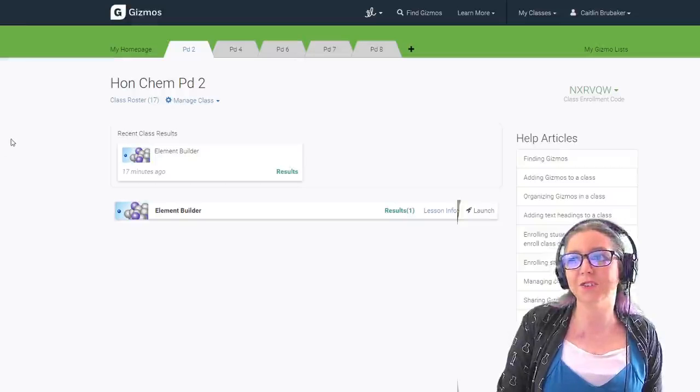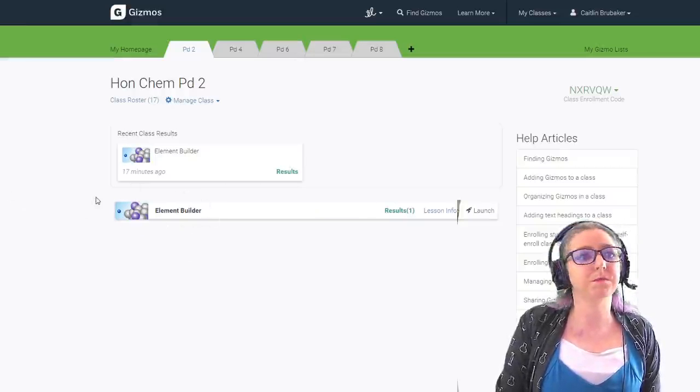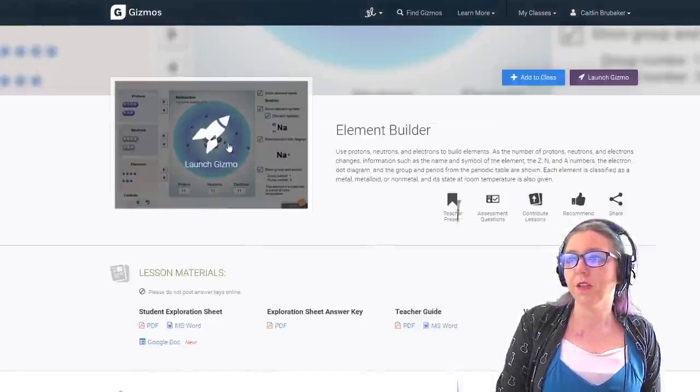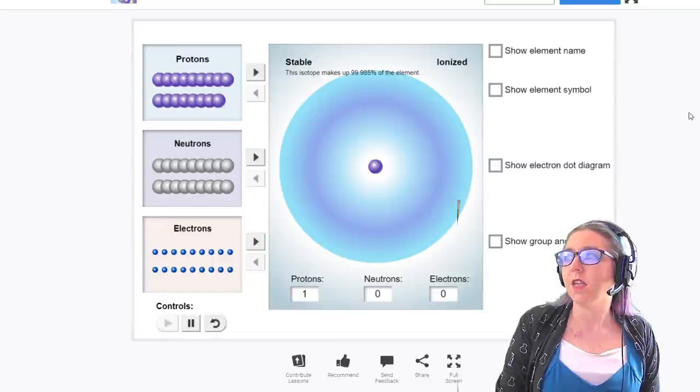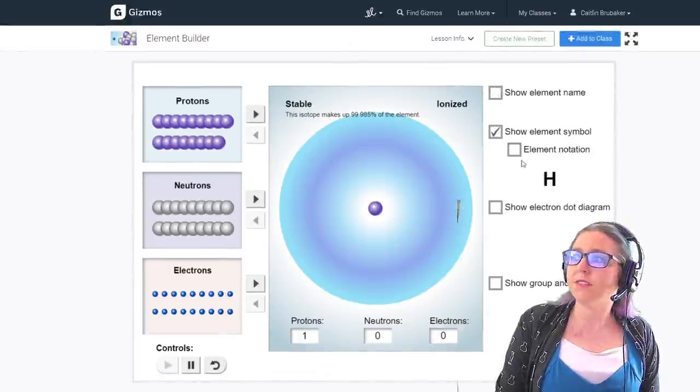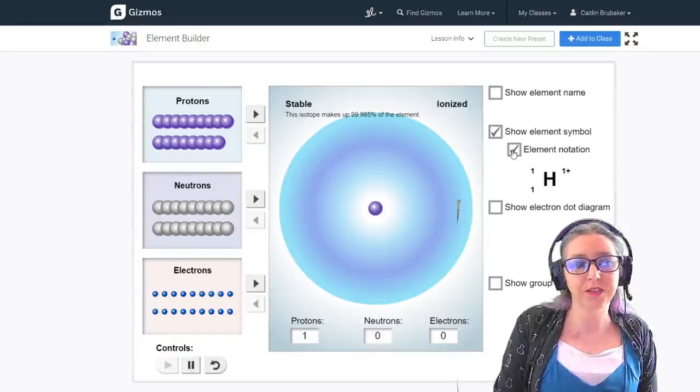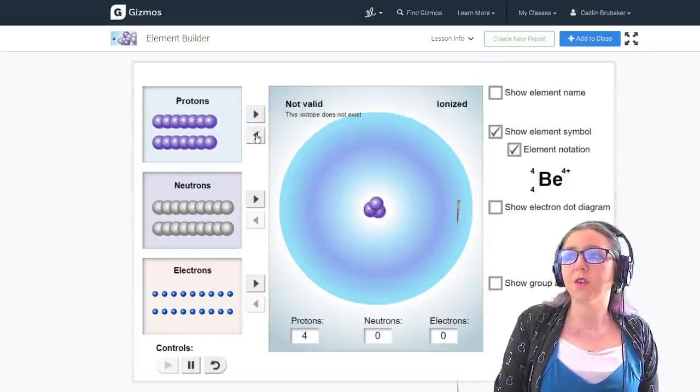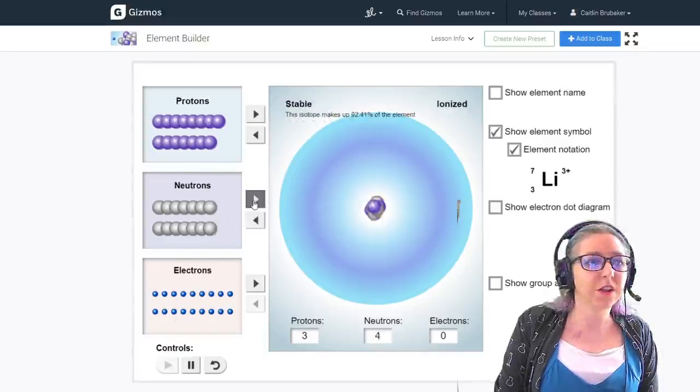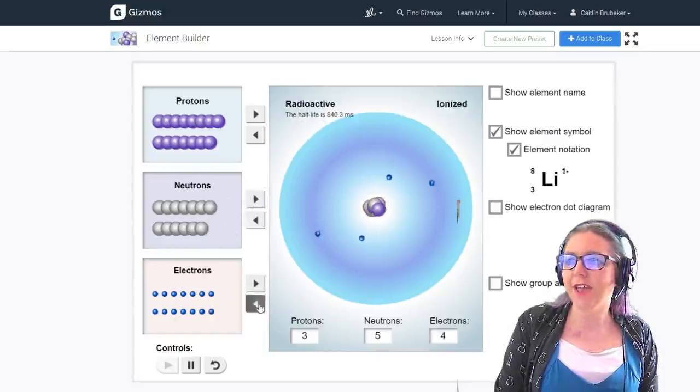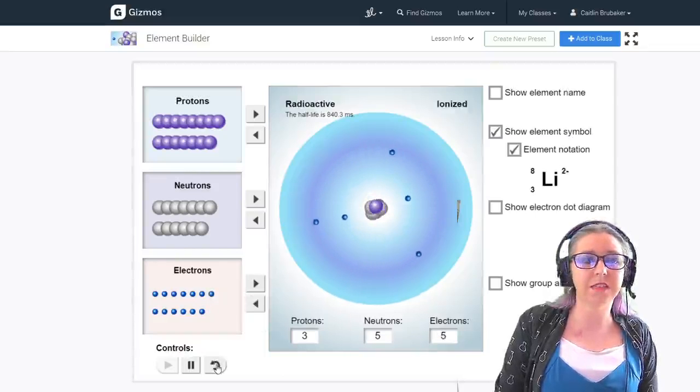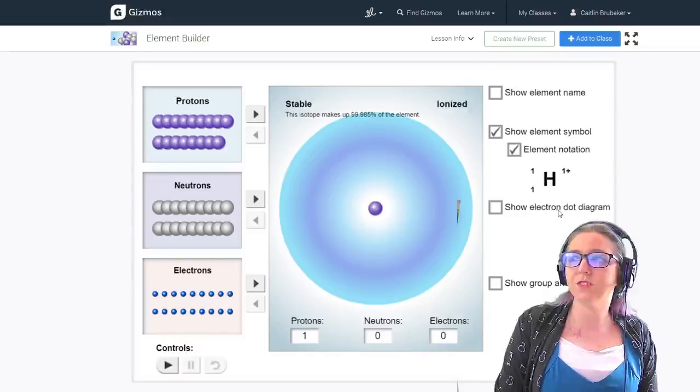Once you've joined our class, you should have noticed that there's only one gizmo that's currently up for you to work on. Click on Element Builder. Launch your gizmo. Sometimes you're going to need to see your element name. Usually you need to see your element symbol or the element notation. You're just playing around with it. What happens as you add and remove some protons? What changes as you add and remove neutrons? And what changes as you add and remove electrons? Anytime you need to restart it and get a clean slate, just hit that undo button.